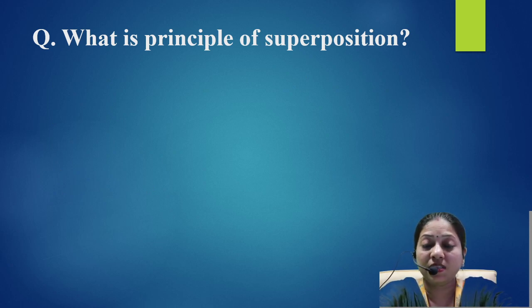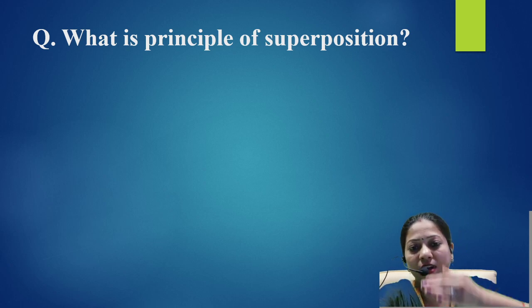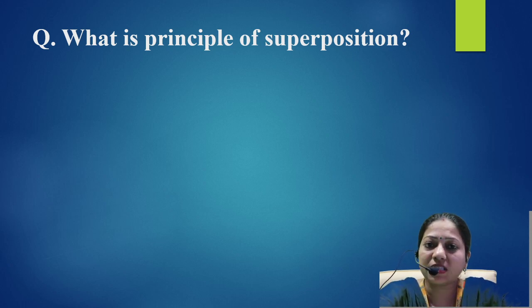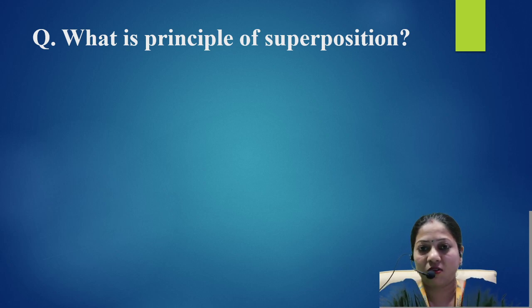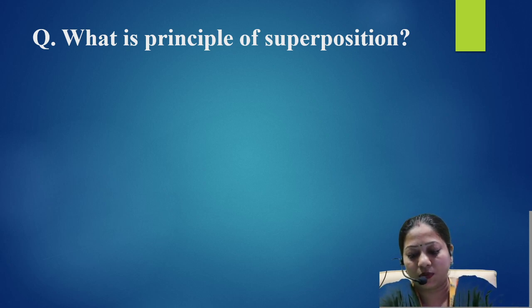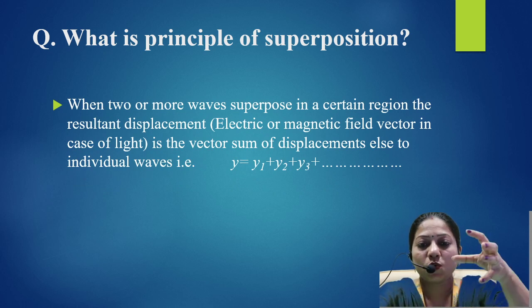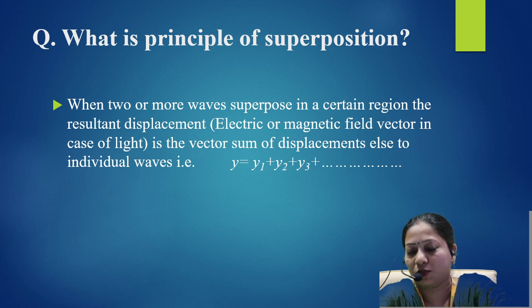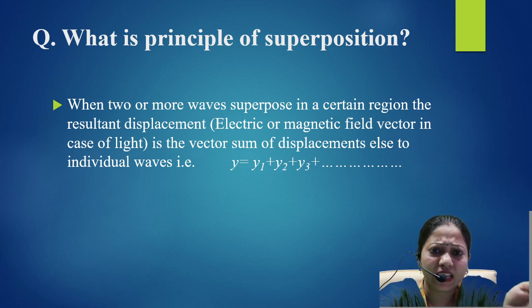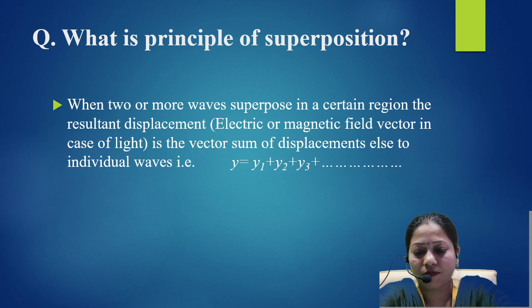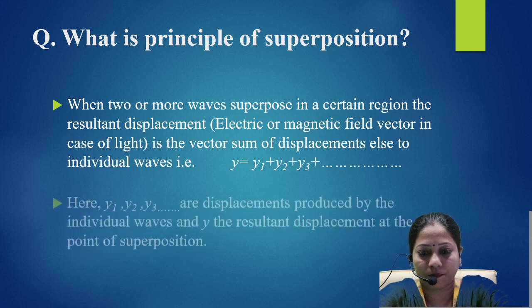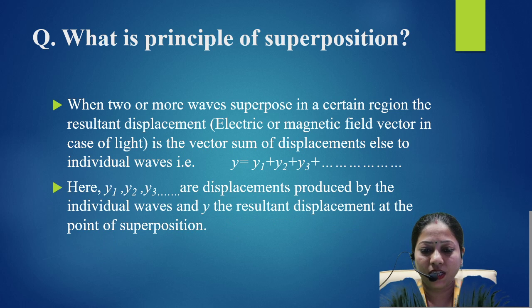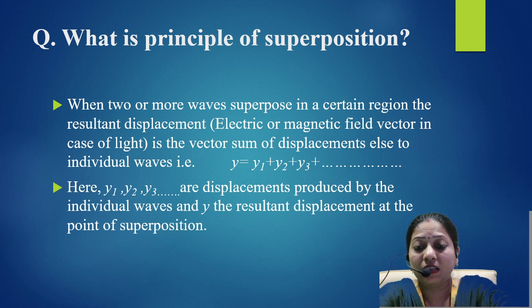Now we come to the principle of superposition, which will be discussed in the context of interference of light. Before starting Newton's rings, you should know all wave properties and principles. The principle of superposition states that when two or more light waves superpose in a certain region, the resultant displacement is the sum — algebraic sum if travelling in the same direction, or vector sum if in different directions — of the displacements due to individual waves. Here y1, y2, y3 are displacements produced by individual waves, and y is the resultant.